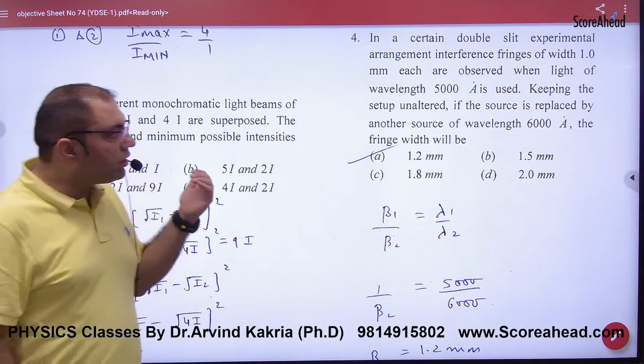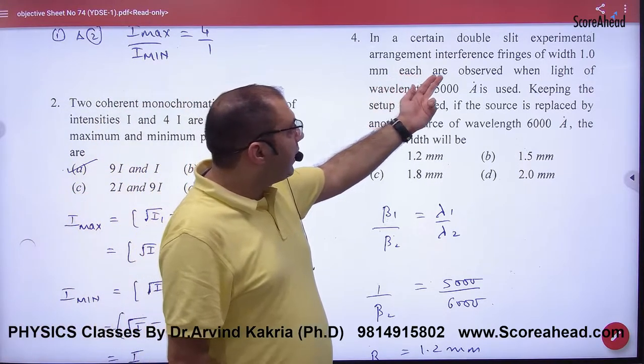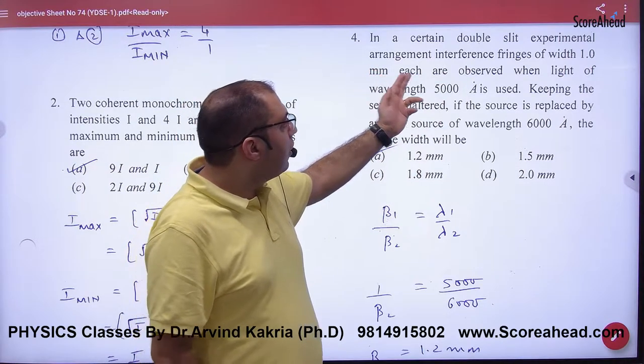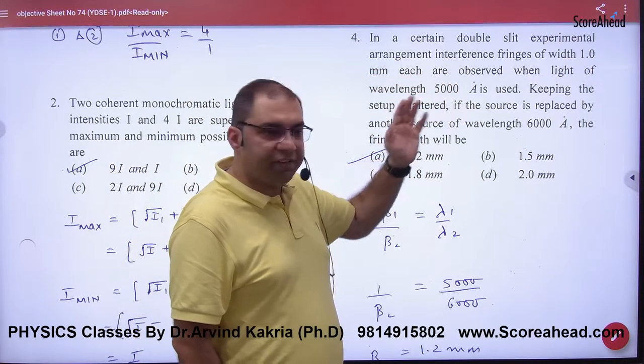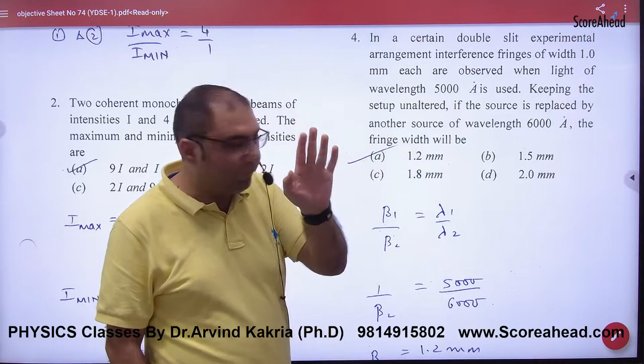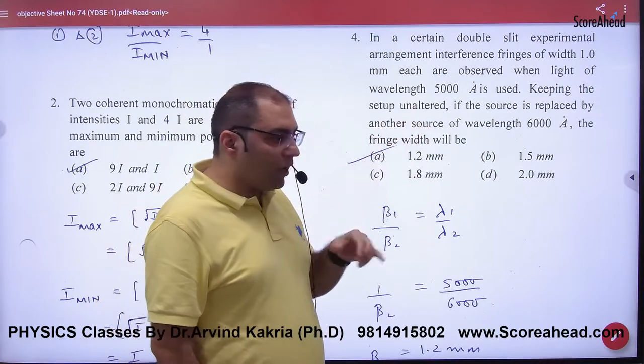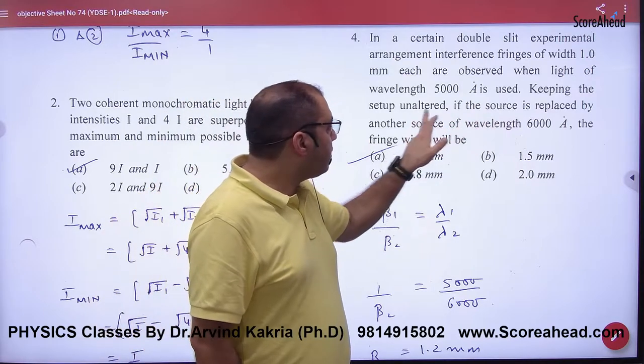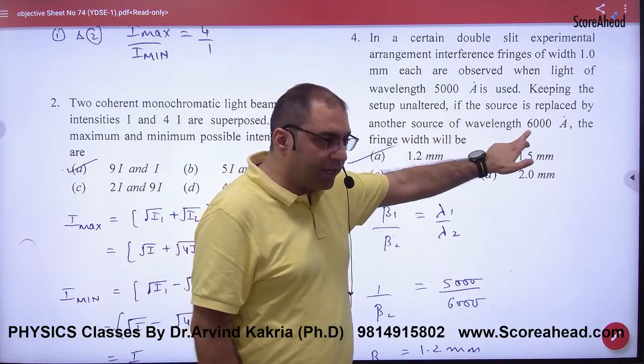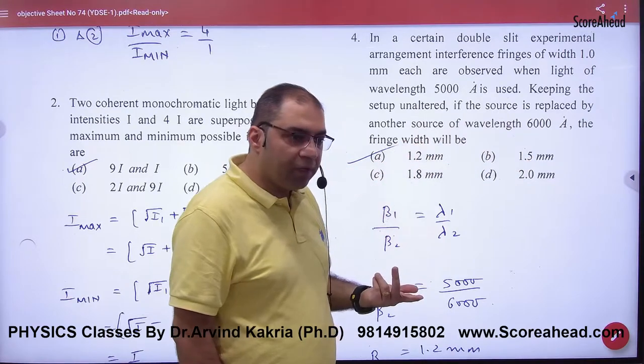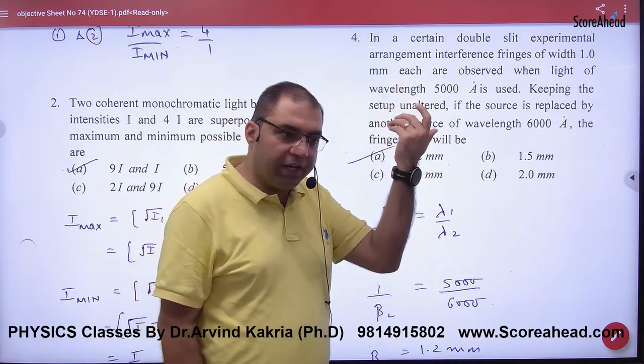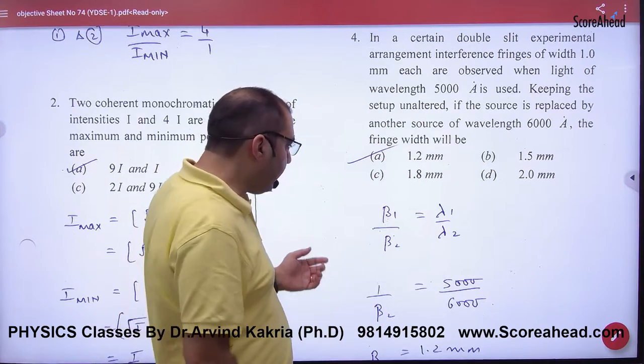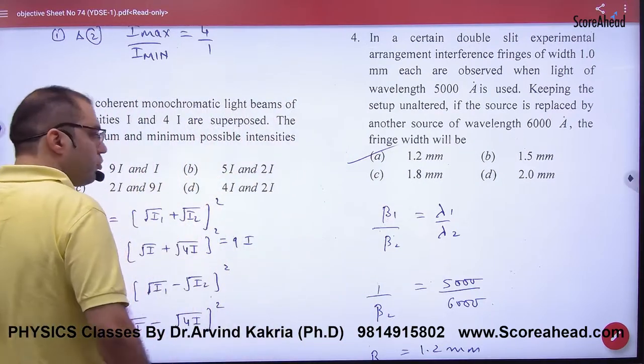In a certain double slit experiment, interference fringes of width 1 mm, beta 1 given, are observed when light of wavelength 5000, so lambda 1 given. Keeping setup unaltered, small d and capital D unchanged, if source is replaced by another source of wavelength lambda 2.